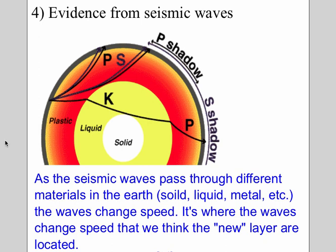Most importantly, evidence from seismic waves — seismic waves moving through the Earth. As a seismic wave passes through different materials — solid, liquid, metal, etc. — the wave changes speed. It's where these waves change speed, the location where the waves change speed, where we think a new layer is located.